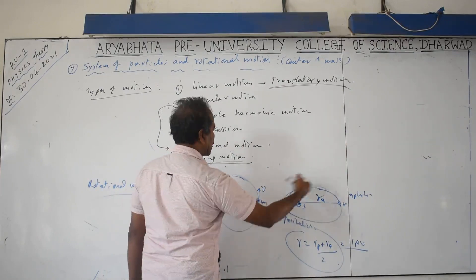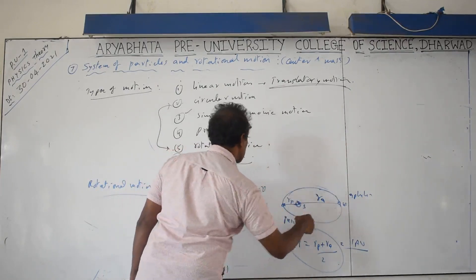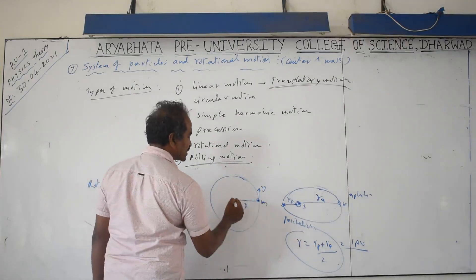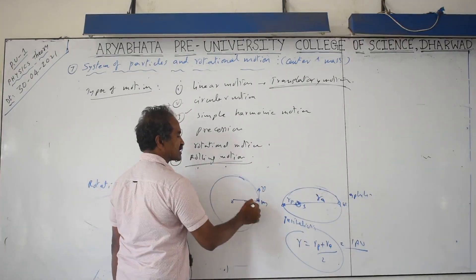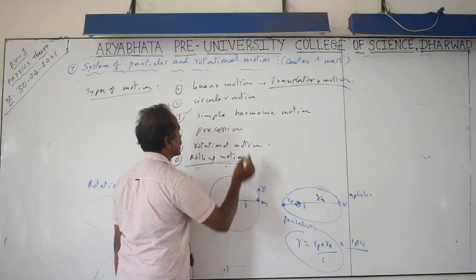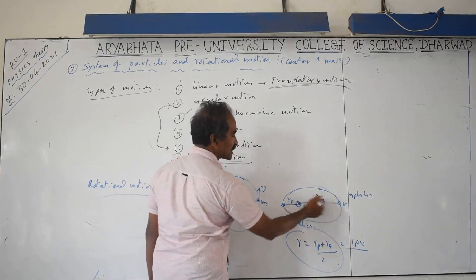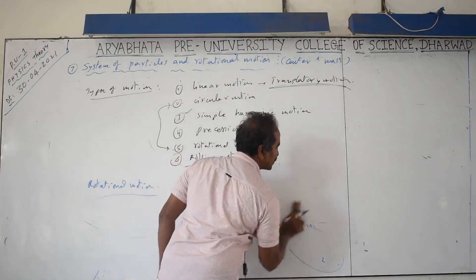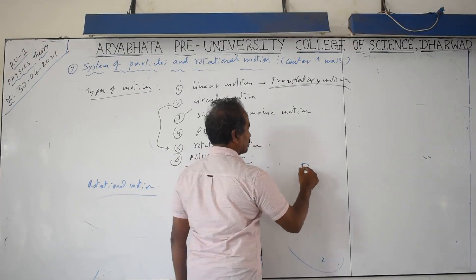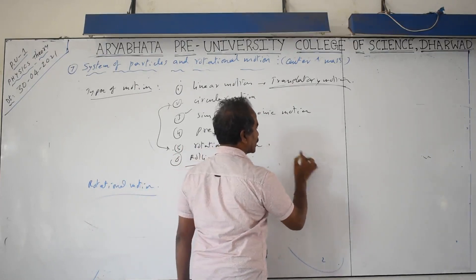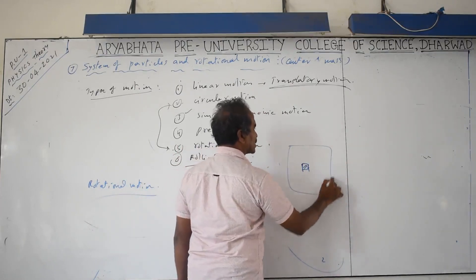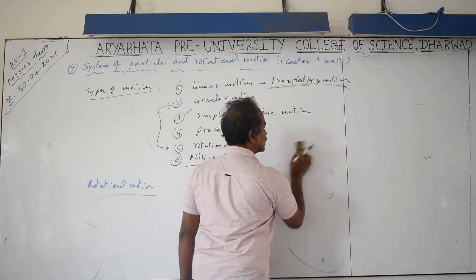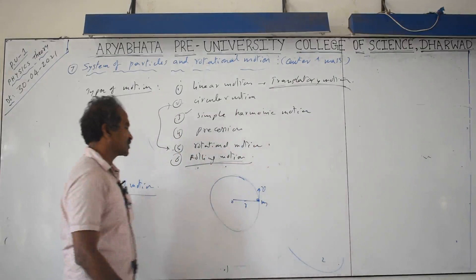Elliptical motion is also rotational motion. The difference: if the distance from center to the rotating object is constant, it is circular motion; if not constant, it is any other rotational path. A bus moving on an irregular road around a building is also rotational motion, where the distance from center is not constant.